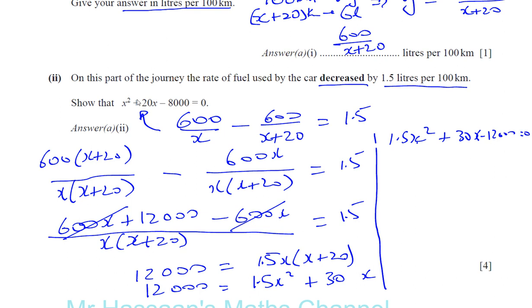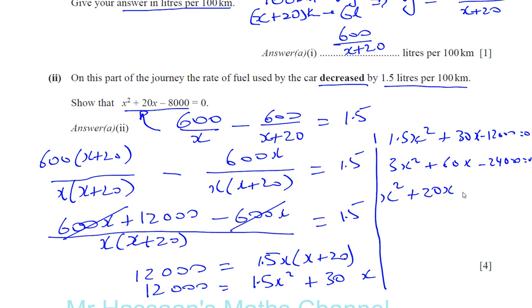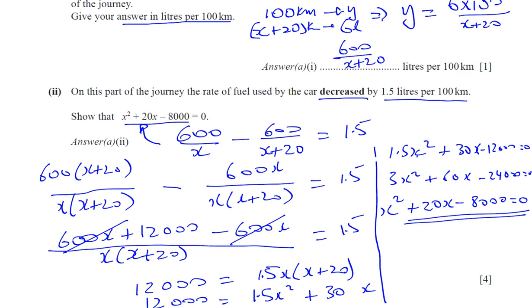Now I want to simplify this to the required form. First, multiply everything by 2 to eliminate the decimal: 3X squared plus 60X minus 24,000 equals zero. Then divide everything by 3: X squared plus 20X minus 8,000 equals zero. And there we have our answer — that's part two of the question answered. I'll do the next part in the next video.